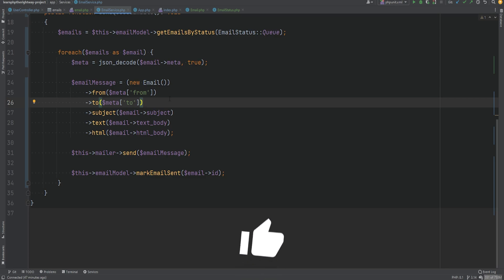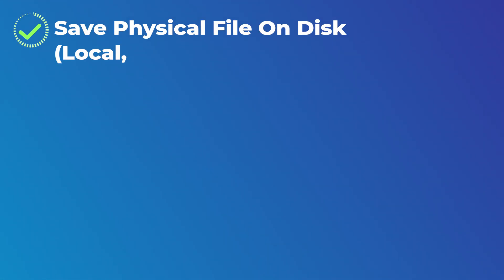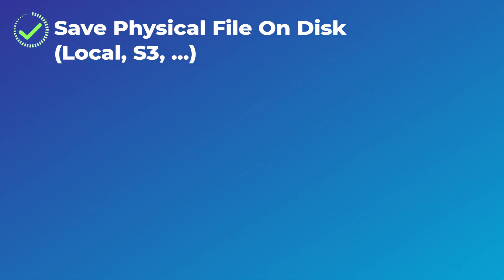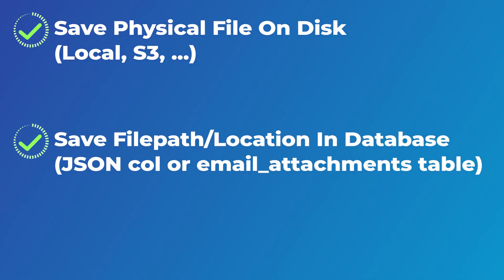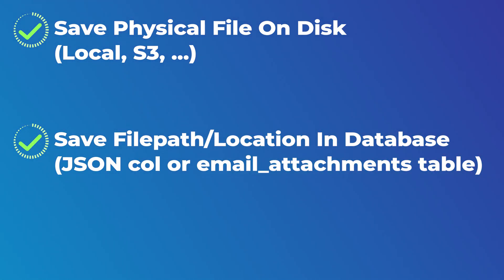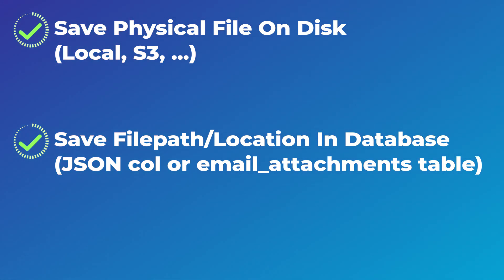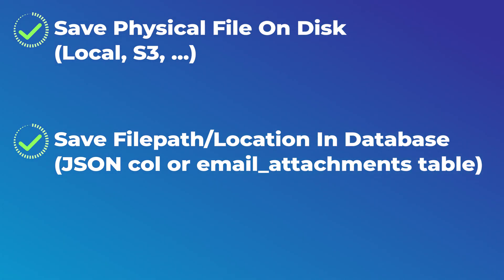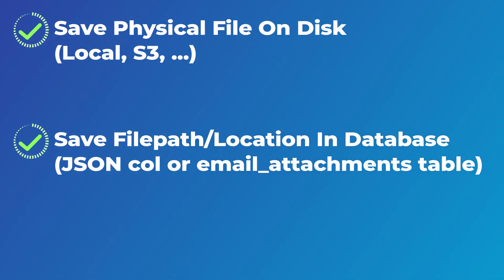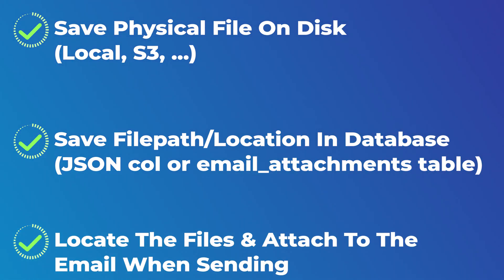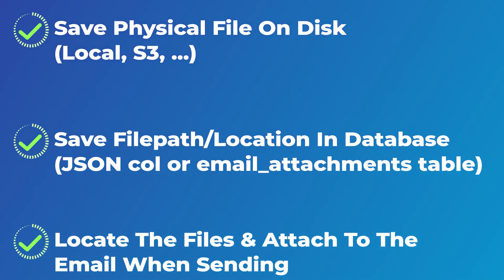You might be asking about attachments. When creating an email record from the UserController, if there's an attachment you want to send, you could save it locally in the file system or in storage like S3, then save the file path in a JSON column in the emails table to support multiple attachments. Or even better, store them in a separate 'email_attachments' table, then pull those records and look up the physical files when sending.